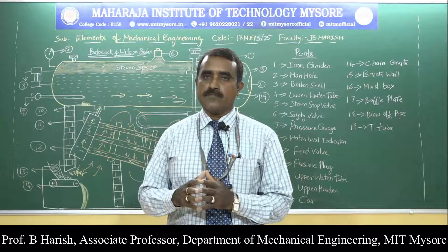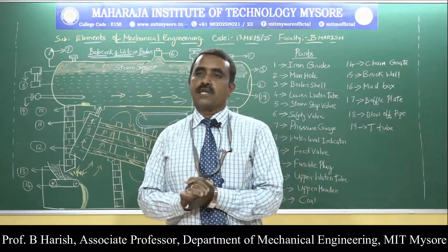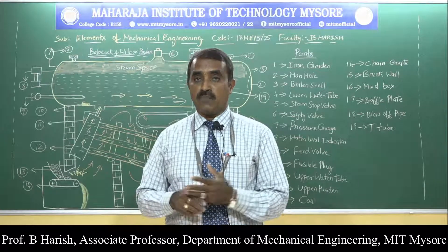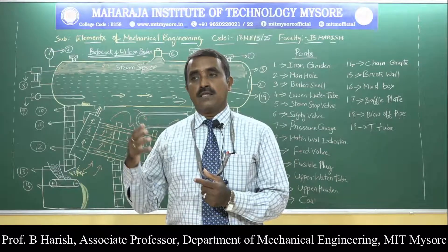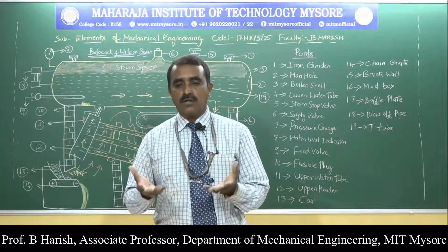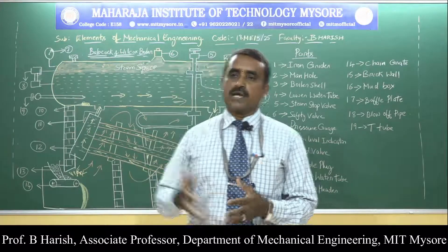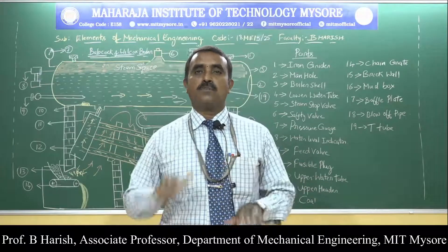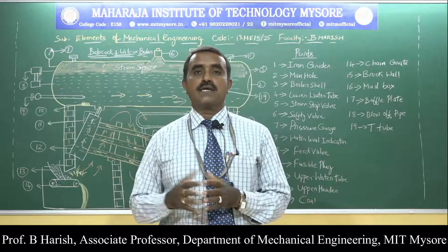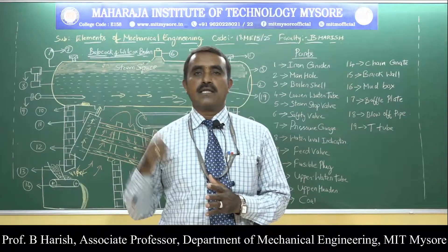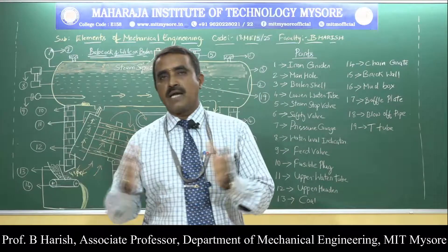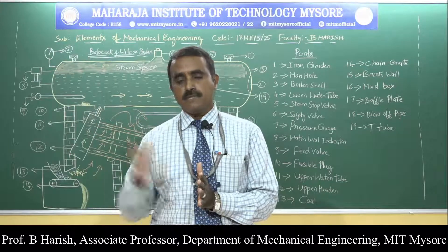This particular boiler is used in applications of power generation where high pressure steam is required and variation in steam demand is significant. In power plants, power generated varies according to usage, so fluctuations must be managed. The Babcock and Wilcox boiler is suited for high pressure power generation and can easily handle such fluctuations. Now we look at the construction — what are the major parts of the boiler.